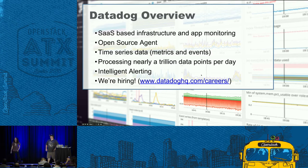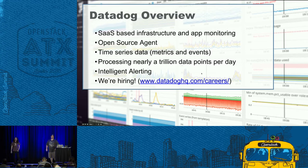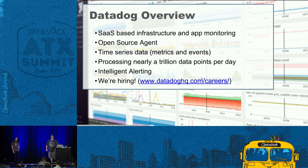We're processing about a trillion data points a day across our customer base, working at quite large scale with folks running OpenStack and various public cloud solutions. We help you build insightful dashboards, democratize that so folks across your organization can build their own, and bring in things like intelligent alerting. As your environments are changing constantly, you can't really stick with threshold-based alerting, so we bring in things like outlier detection and more algorithmic approaches. We're also hiring — stop by the booth.